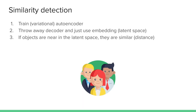We can also use autoencoders for similarity detection. We train an autoencoder as before, then throw away the decoder — we just need the embedding, the latent space it learned. In our latent space, we extract some features, and if objects are in similar regions of the latent space they are probably similar. If the distance in the latent space is very small, they are probably similar; if the distance is large, they are probably dissimilar.